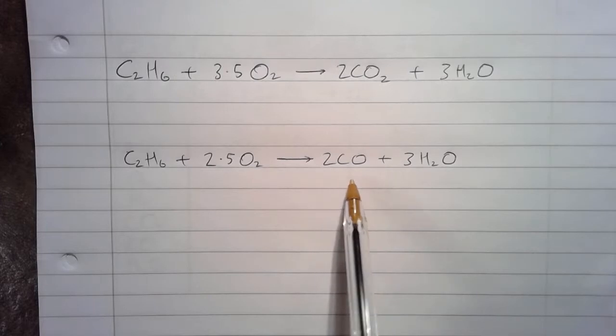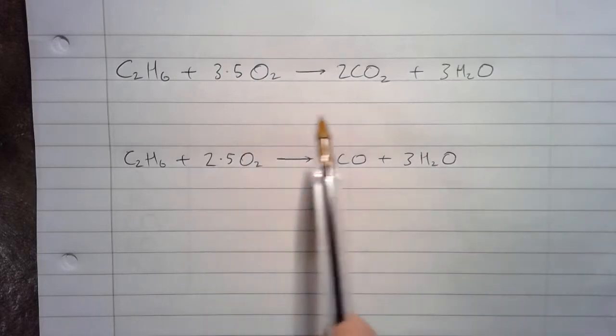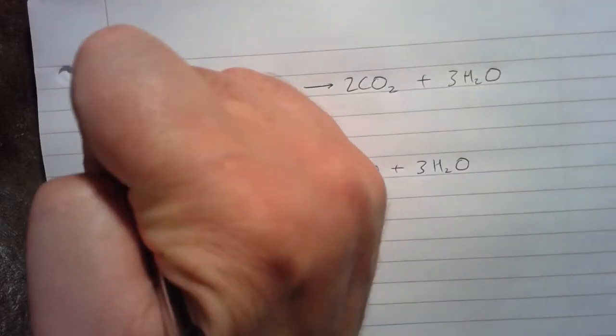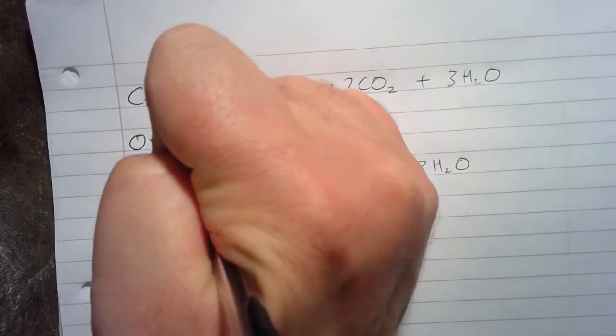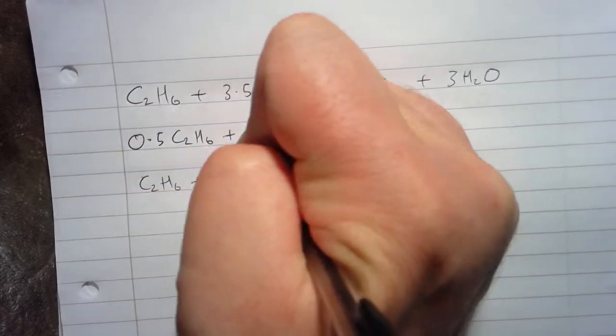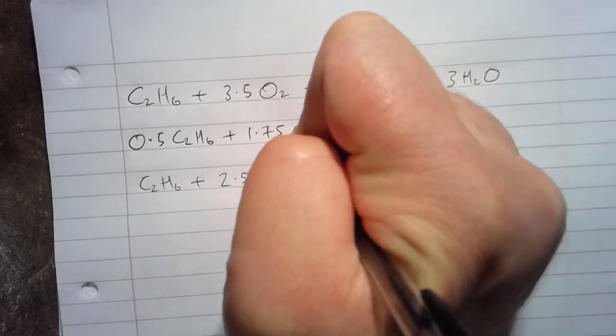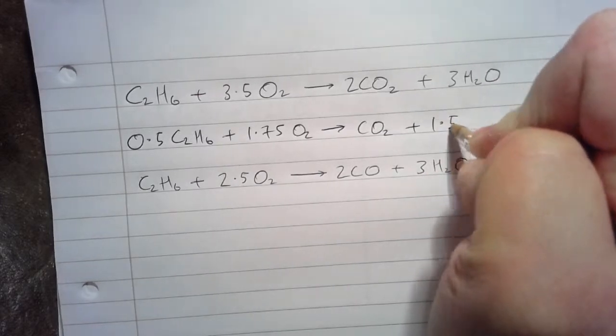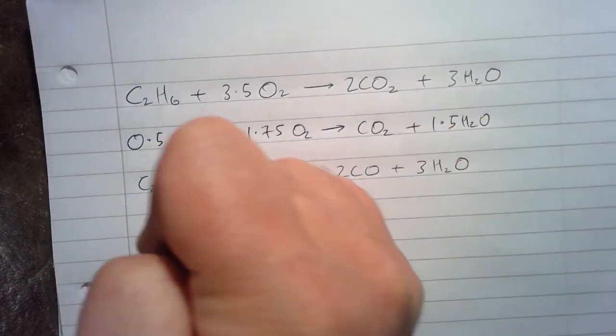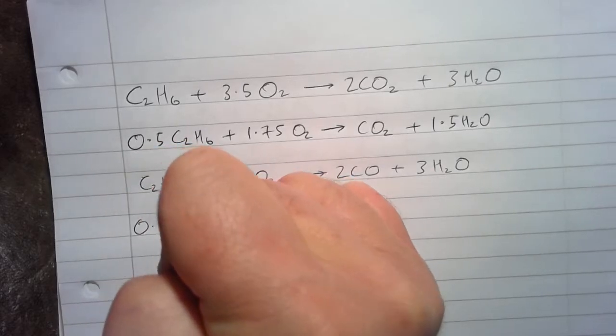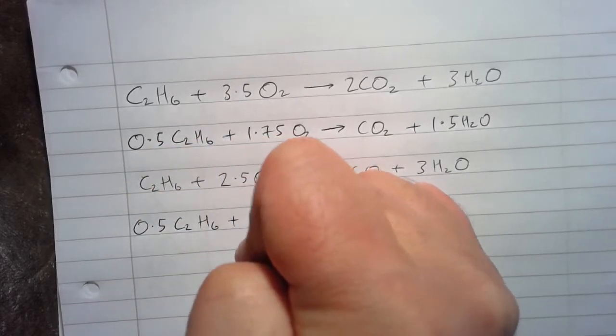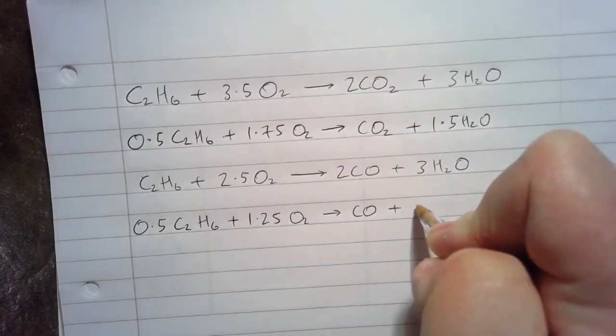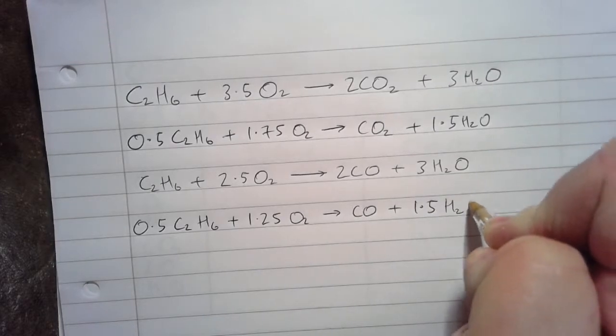And I'm going to divide the stoichiometry by 2 for both of these, and it'll make things easier later on. So we'll have 0.5 C2H6 plus 1.75 O2 goes to CO2 plus 1.5 H2O, and 0.5 C2H6 plus 1.25 O2 goes to CO plus 1.5 H2O.